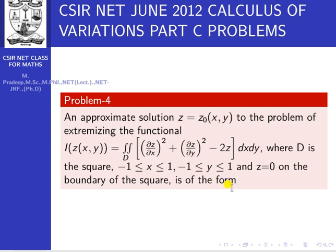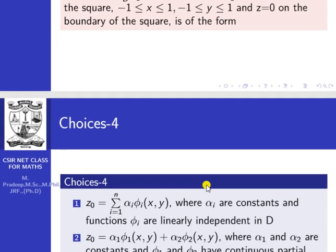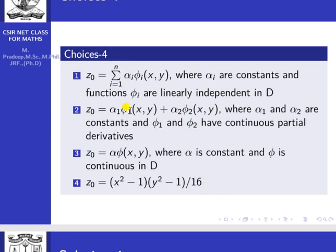The options are: First, z₀ = Σ αᵢ φᵢ(x, y) where αᵢ are constants and functions φᵢ are linearly independent in D. Second, z₀ = α₁φ₁(x,y) + α₂φ₂(x,y) where α₁, α₂ are constants and φ₁, φ₂ have continuous partial derivatives. Third, z₀ = α·φ(x,y) where α is a constant and φ is continuous in D. Fourth, z₀ = (x²−1)(y²−1) multiplied by 1/16.